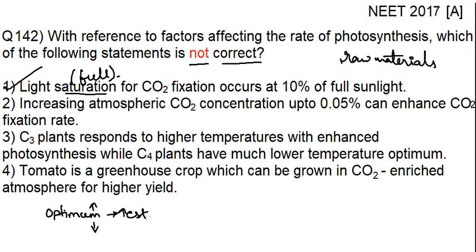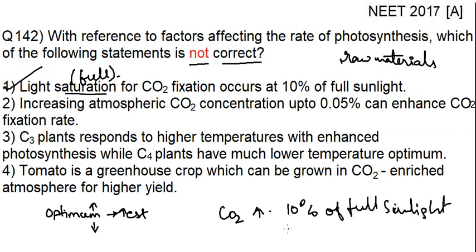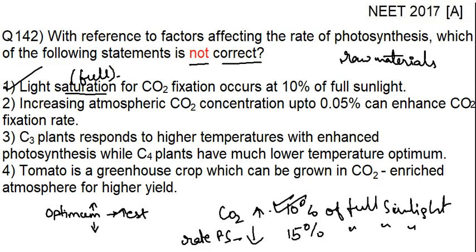When you talk about light saturation, the CO2 fixation rate is highest and cannot increase after 10% of full sunlight. If you provide 15% of full sunlight, you will see a decrease in the rate of photosynthesis. This is the meaning of saturation — the saturation level is attained at 10% of full sunlight, and even if you increase sunlight beyond 10%, there will not be any increase in the rate of photosynthesis.